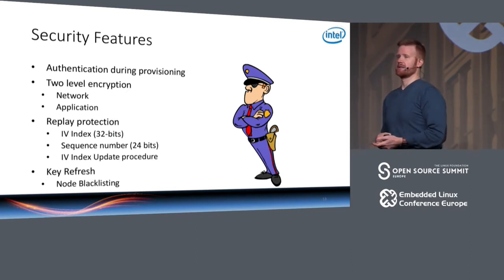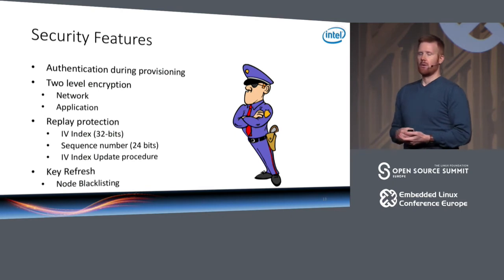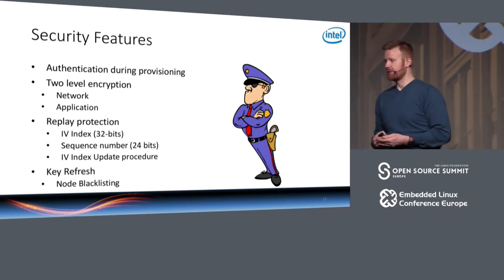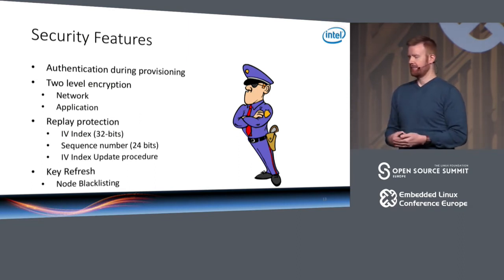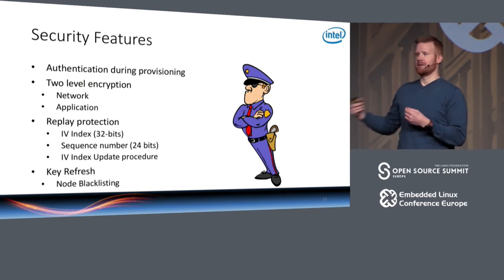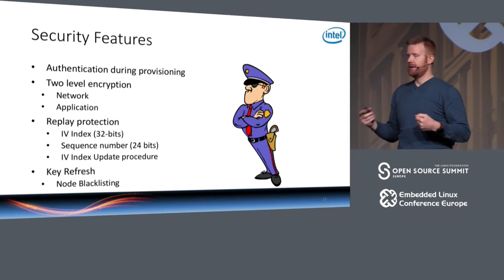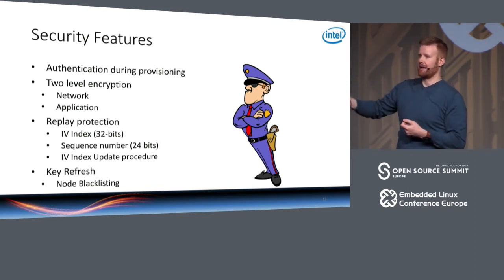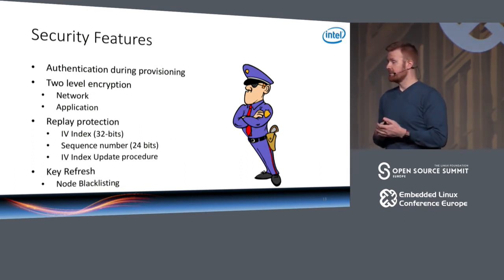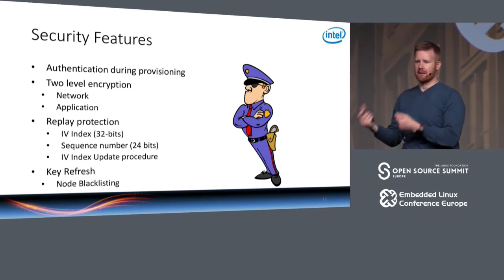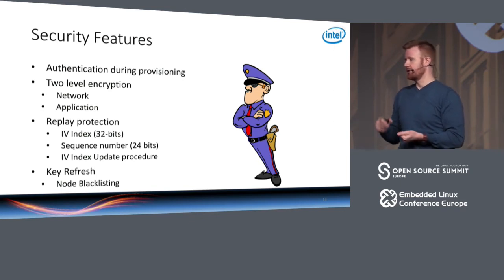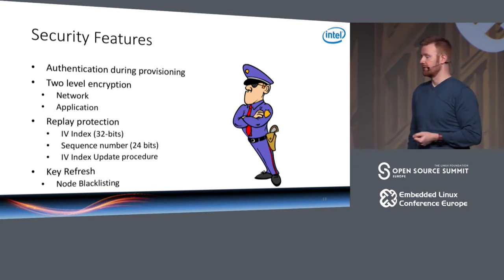Regarding security, when you take a new device into a mesh network, the mesh provisioning protocol is modeled on the Bluetooth pairing protocol, using the same security mechanisms. This involves elliptic curve Diffie-Hellman, where you receive the remote public key, combine it with your own private key to generate a DH key, and that's used to establish a secure relationship. There are also mechanisms for passing information out of band, such as getting the public key or a PIN code out of band during provisioning — the same as with Bluetooth pairing.